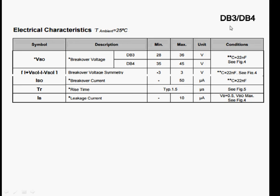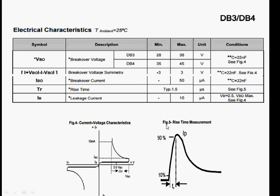You may take an example of the DIAC DB3 or DB4. And in this case, note it down. The break-over voltage may be from 28 to 36 volts, and maybe from 35 to 45. Because if we say this is the ideal DIAC, then the graph is symmetrical both sides.